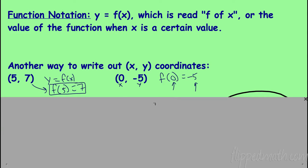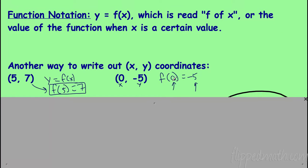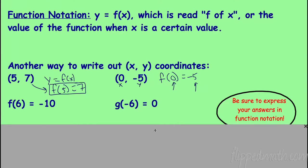Sometimes people ask why we need function notation — it's more descriptive. Look back at y = -10: I have to look back and say 'y is -10 when x is -3.' With function notation, everything is already described — the value of x is right there, and so is the value of y. We can also go from function notation to a point easily: if the notation says x is -6 and y is -10, we immediately know the point.